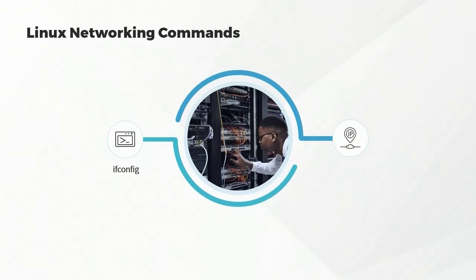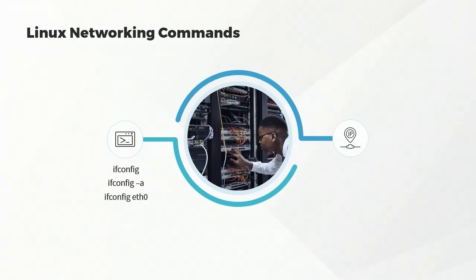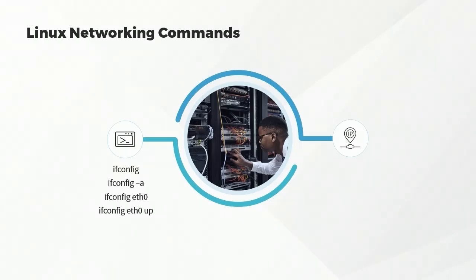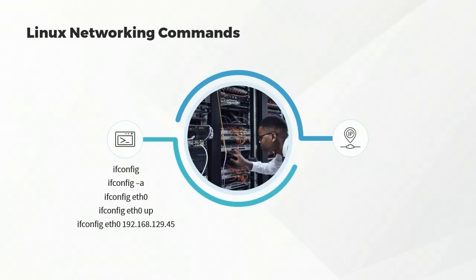You can issue ifconfig -a to list active network configurations, or specify an interface such as ifconfig eth0. If an interface is down, bring it up with ifconfig eth0 up, or bring it down with the down suffix. You can also assign an IP address at the command line using ifconfig. However, ifconfig is an older command, and modern Linux distributions more commonly use the ip command set.